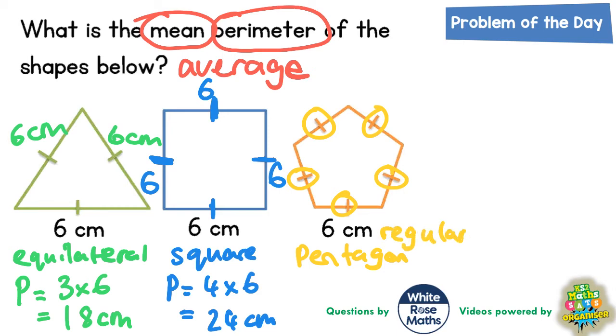Regular shapes have all sides and angles the same. Because all sides are the same, all the sides are sixes. So the perimeter of the pentagon is five lots of six, and that is 30 centimeters.